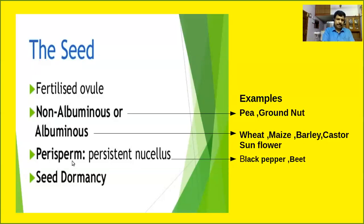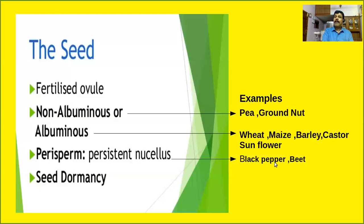The next concept is perisperm. Perisperm means persistent nucellus present in certain seeds. Nucellus is actually the homogenous mass of tissues present inside the young ovule. Nucellus basically provides nourishment to the developing embryo sac or female gametophyte. In most plants, the nucellus is completely consumed by the developing embryo sac. But in some plants like black pepper and beet, persistent nucellus is present, which is collectively called perisperm.